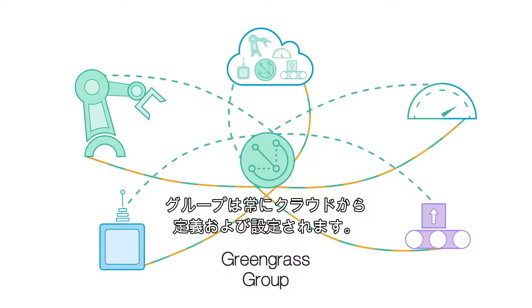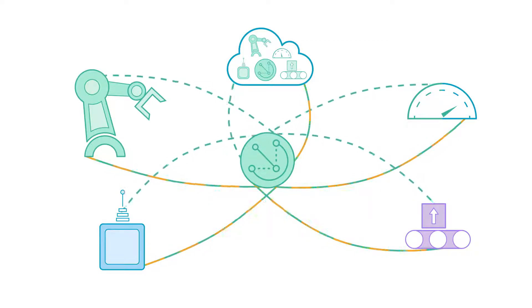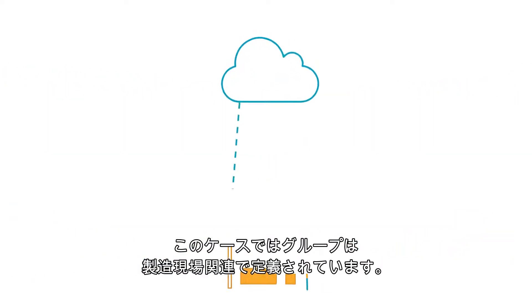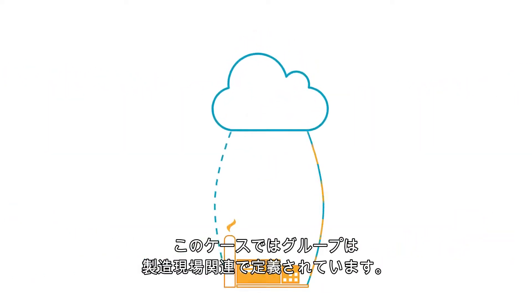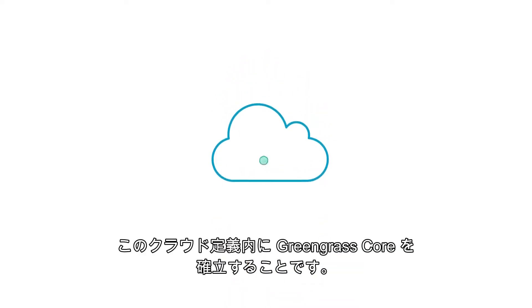Groups are always defined and configured from the cloud. In this case, the group is defined around a manufacturing site. The first step in creating a new group is to establish a Greengrass core in this cloud definition.